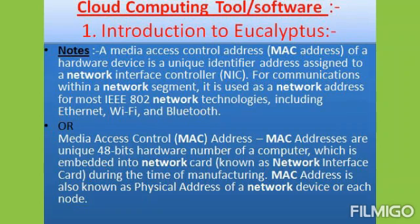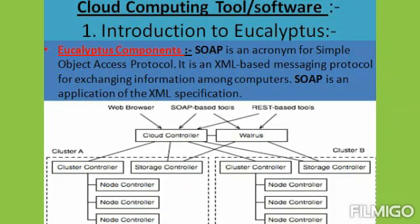In system mode, Eucalyptus software assigns a MAC address and attaches the instance's network interface to the physical network through the node controller. The system mode does not offer elastic IP addresses, security groups, or virtual machine isolation. In static mode, Eucalyptus assigns internet protocol addresses to instances. Static mode does not offer elastic IP, security groups, or VM isolation.